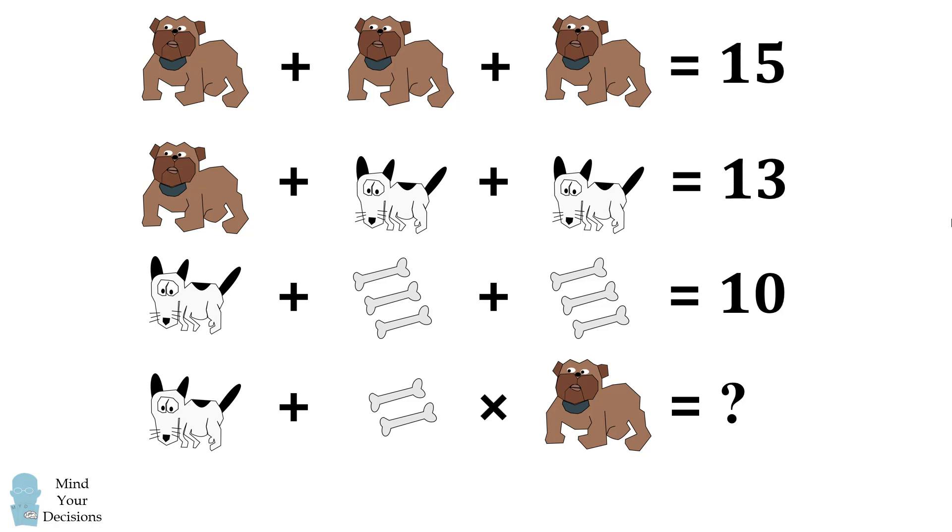There are two details you have to pay attention to. In the third line, the equation involves three dog bones at a time, and in the very last line, there are just two dog bones. Secondly, the very last line involves a multiplication.